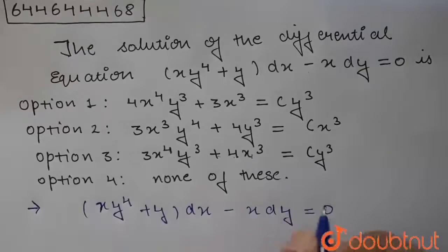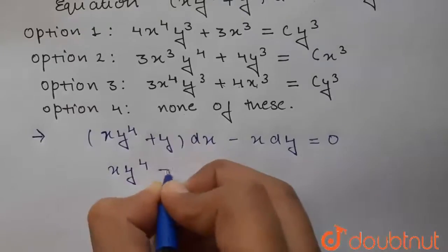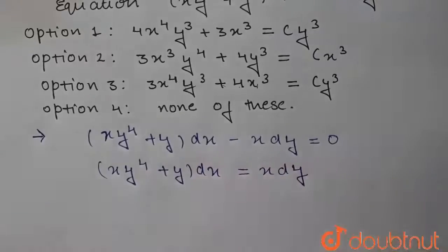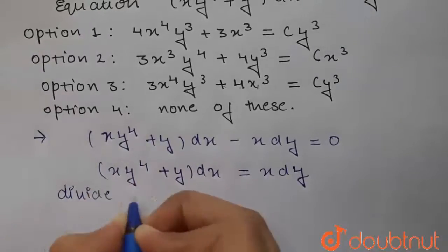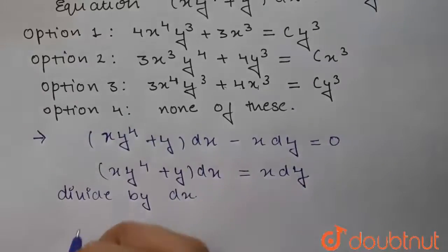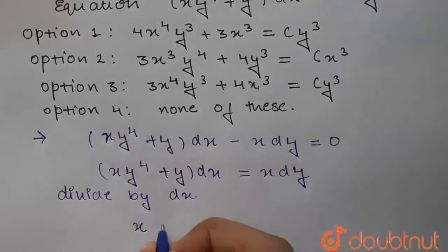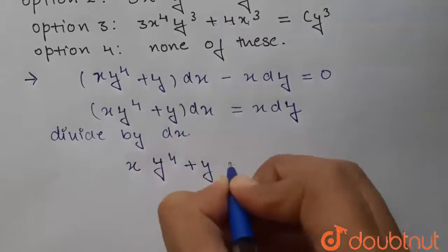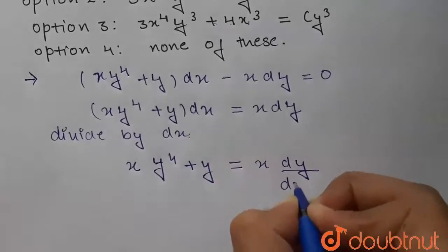We are having four options, so let us start with the solution. We are given the differential equation xy to the power 4 plus y dx minus x dy equals 0. Sending terms to the right hand side, we get xy to the power 4 plus y dx equal to x dy. Now we divide this whole equation by dx.